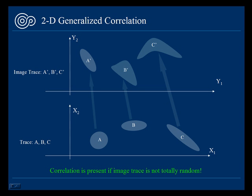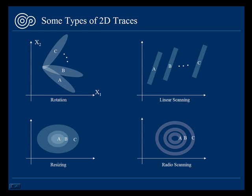In practice, we can use different types of trace to explore correlations between maps of data sets. Here are some trace examples. We can for instance rotate a fixed shape, or scan the data points in certain way.